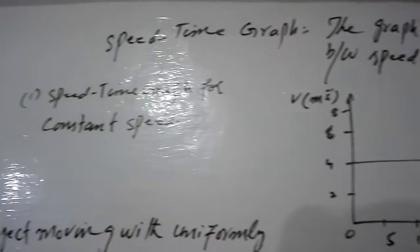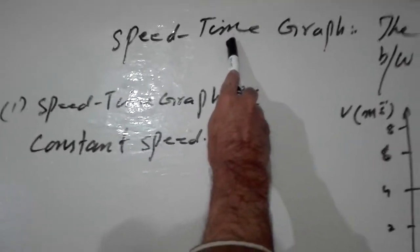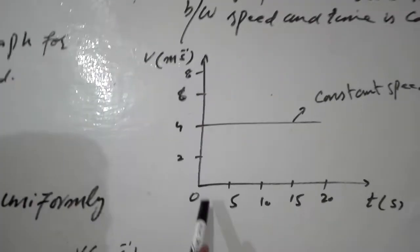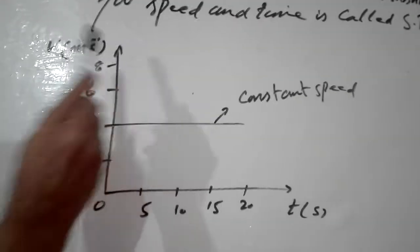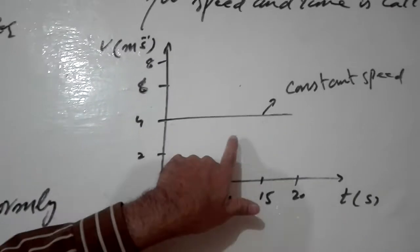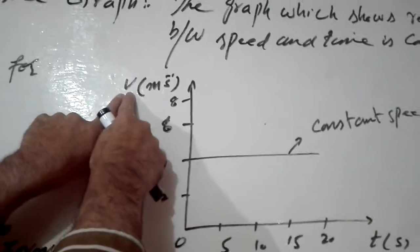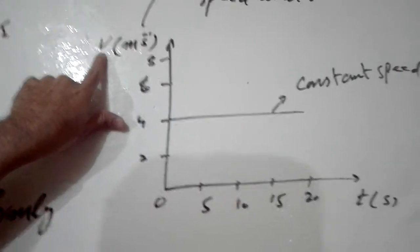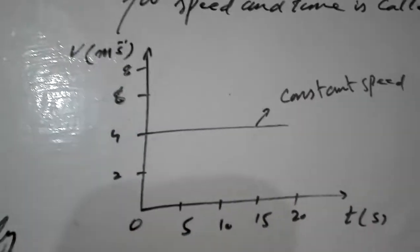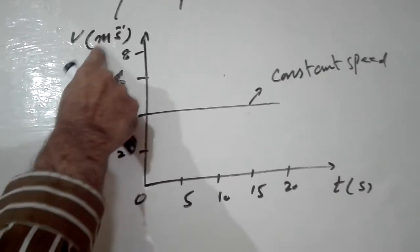You can draw this graph. Time is an independent quantity, so it is always taken on the X-axis. Speed is dependent, so it will be taken on the vertical Y-axis — the same as we did in the distance-time graph. Label the graph: T for time with unit seconds on the horizontal axis, and V for speed with unit meter per second on the vertical axis.